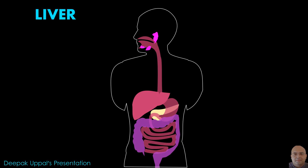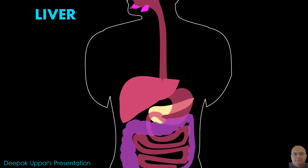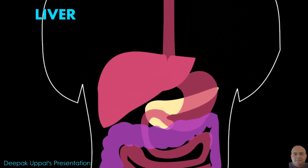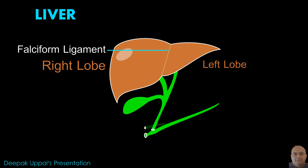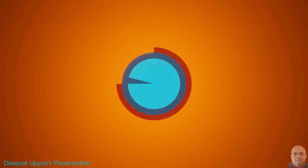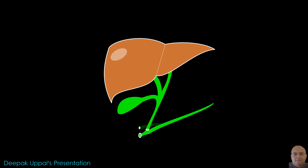Liver: The liver is the largest gland of the human body. It lies in the upper part of the abdominal cavity, just beneath the diaphragm. The liver has two lobes — the large right lobe and a small left lobe. The right lobe is further divided into the quadrate and caudate lobes. The right and left lobes of the liver are divided by a flap of peritoneum known as the falciform ligament.